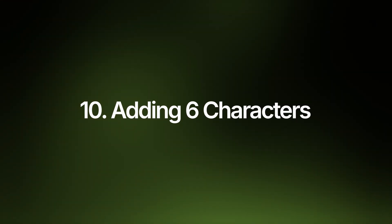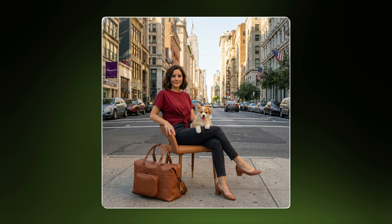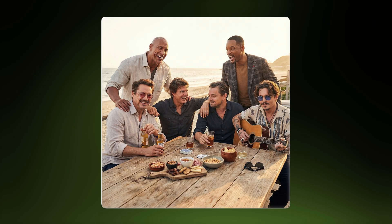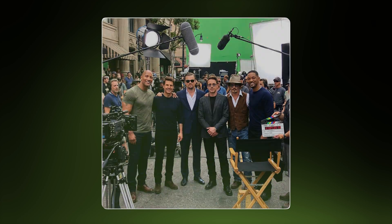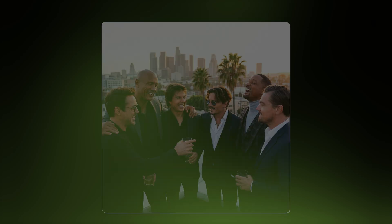You can add multiple different images and ask it to generate something from them. For example, I added random images of a bag, t-shirt, a city street, chair, dog, and a character — and the output shows the woman sitting on a chair in the street holding her dog with the bag nearby. It also supports celebrity images very well with no censorship issues. You can combine expensive-to-cast celebrities together, place them on movie sets, or create other scenarios.